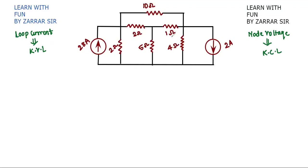We'll start with the first problem. I've already solved this in today's lecture. There is an important topic called super node, but before going to super node I want you to quickly revise nodal analysis using KCL. Suppose I consider three nodes — v1, v2, and v3. Whichever node you consider, you assume it to be at higher potential, and assume the current is moving away from the junction at all times. If the direction of current is not given, assume it to be away from the node.